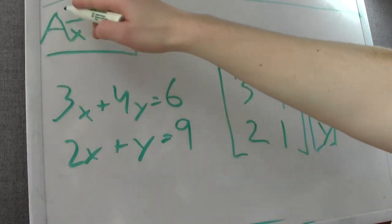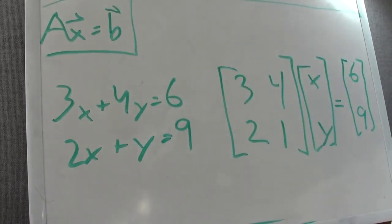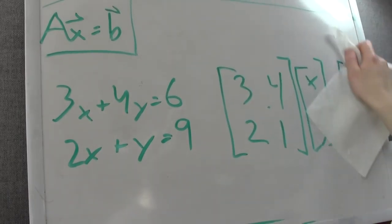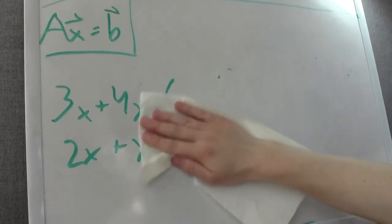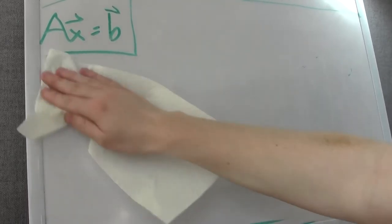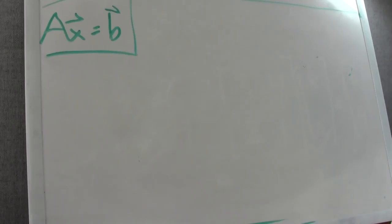Notice that this is in the formula we have up here: we have a matrix noted by the capital letter, we have an x vector which is your coordinates like x and y, and both of those multiply to give you your result vector, which is b. The same thing works for bigger matrices too, or bigger sets of equations.